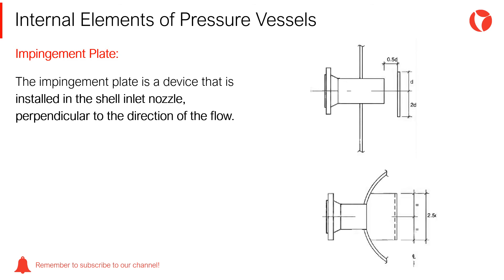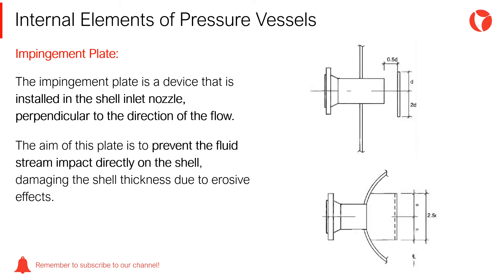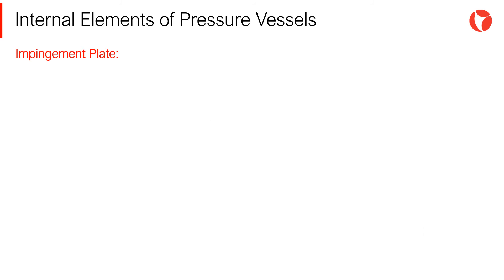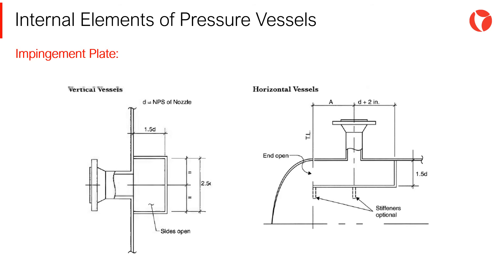The impingement plate is a device that is installed in the shell inlet nozzle, perpendicular to the direction of the flow. The aim of this plate is to prevent the fluid stream from impacting directly on the shell, damaging the shell thickness due to erosive effects. Impingement plates can adopt different configurations: flat plates, perforated, curved plates, wear boxes, etc. The selection of method will depend on the speed of the fluid, corrosiveness, and the desired fluid distribution.